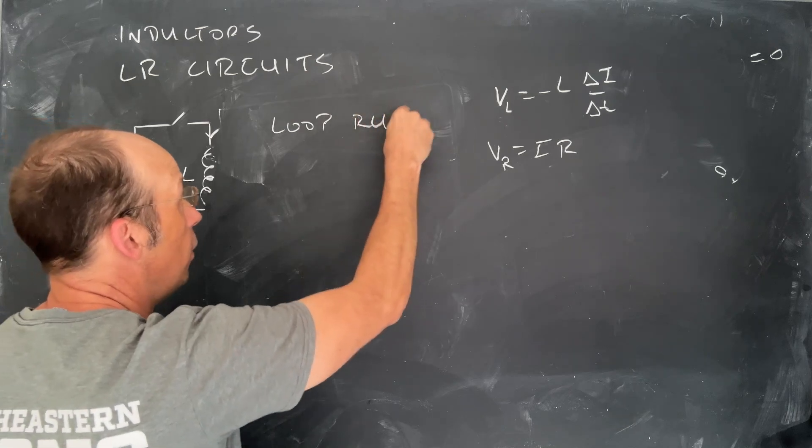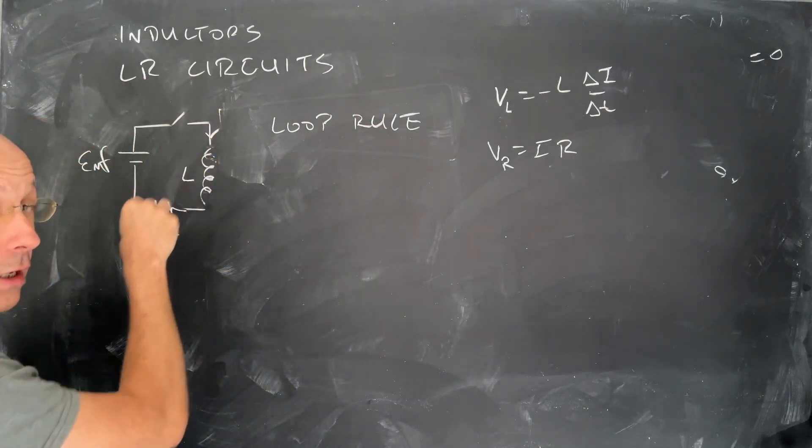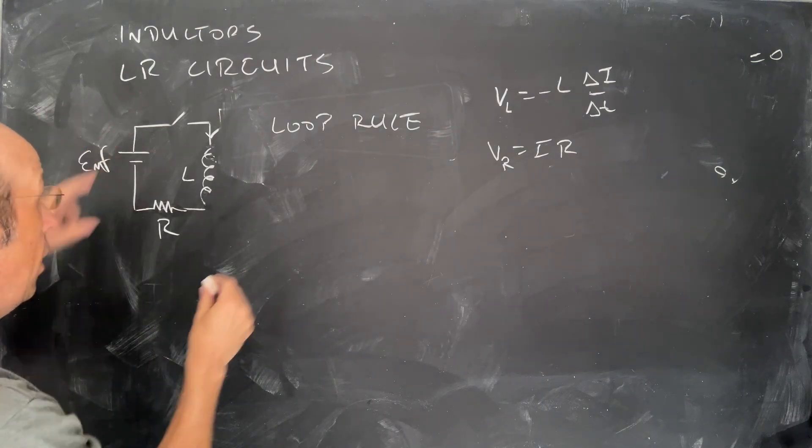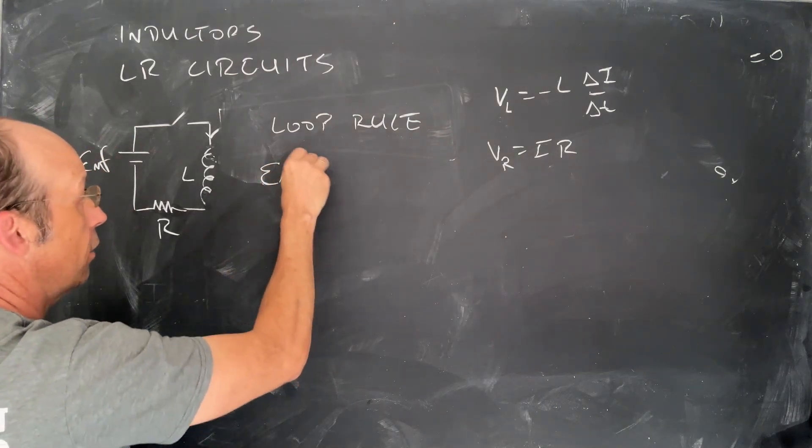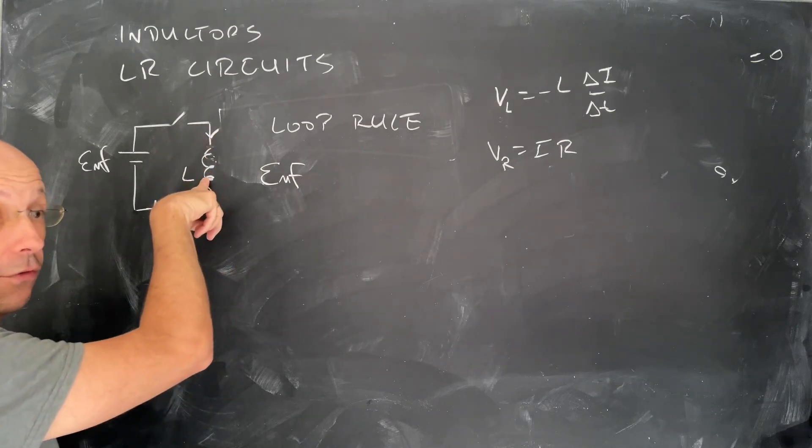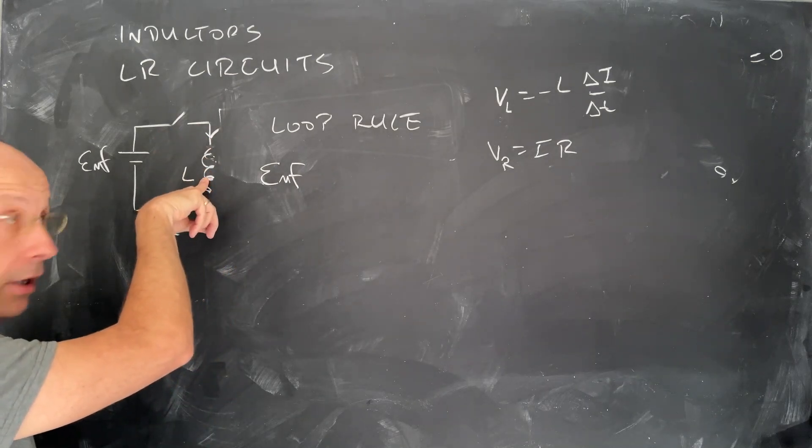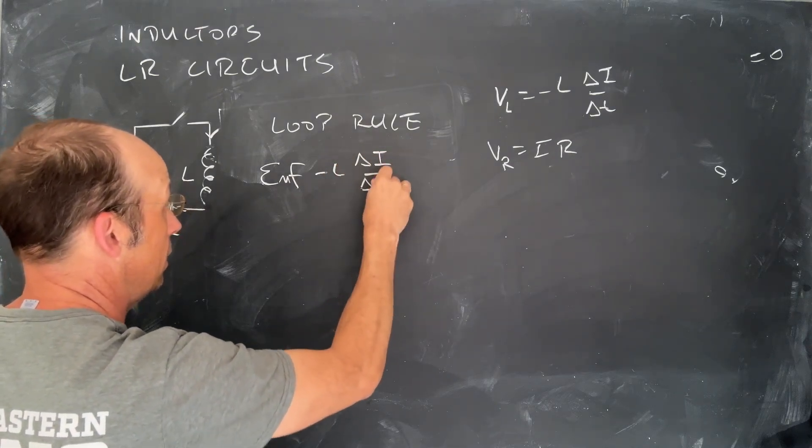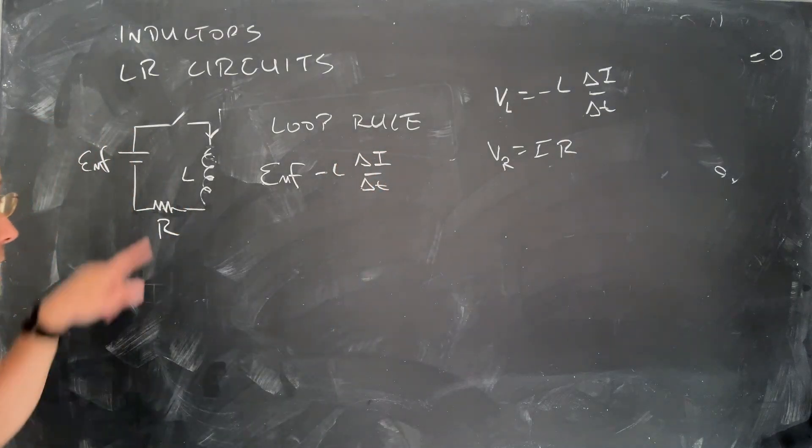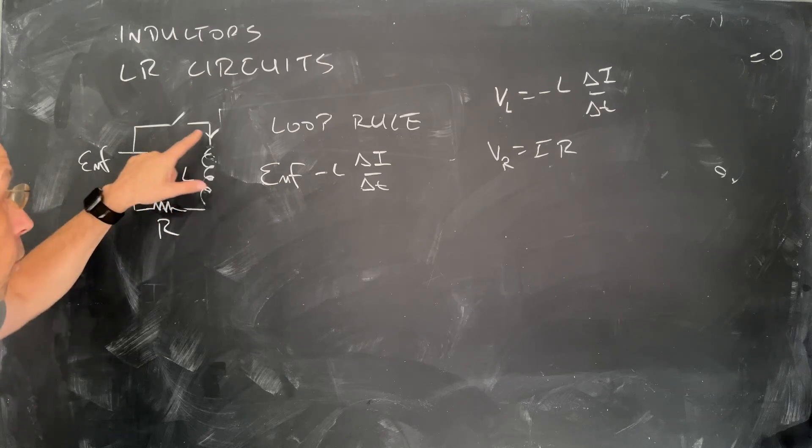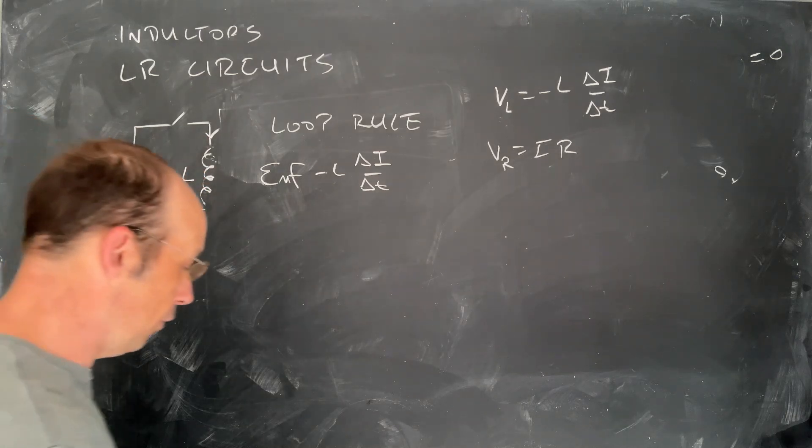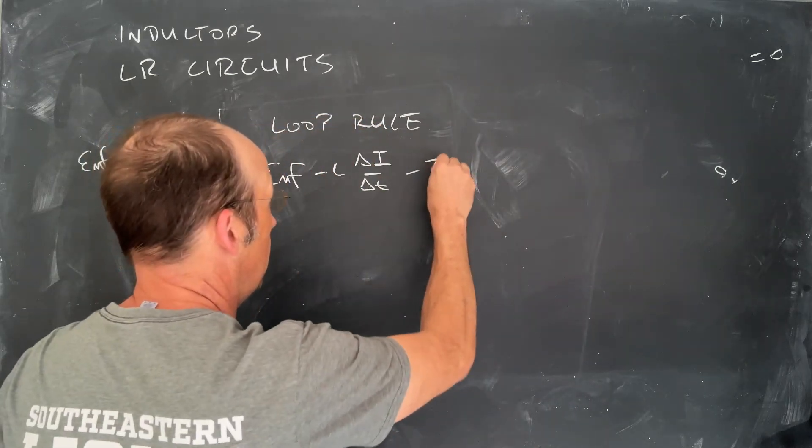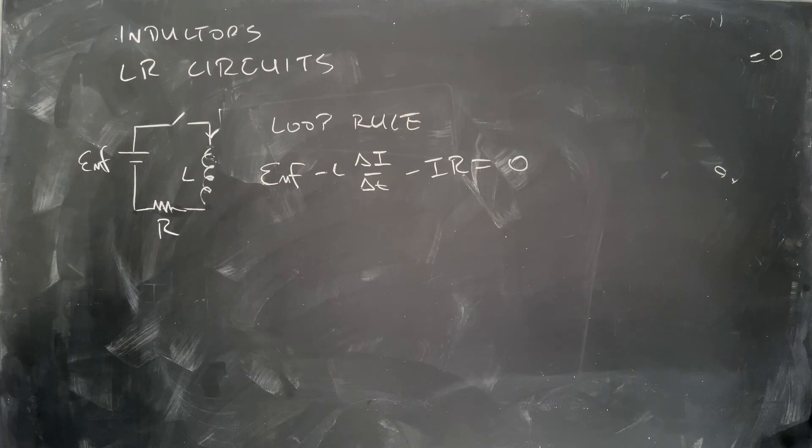The loop rule says that as I go around a circuit, the total voltage has to be zero. Let's just write down that as an equation. So if I start from here to there, I have EMF, which is just the voltage across that battery. And then I'm going to go across the voltage of this, which is going to depend on the current. I'm going to write that as minus L delta I delta T. And then I have the voltage across the resistor. If the current's this way, it would be a voltage drop too. So I get minus IR. That completes the loop, so I'm back to zero.